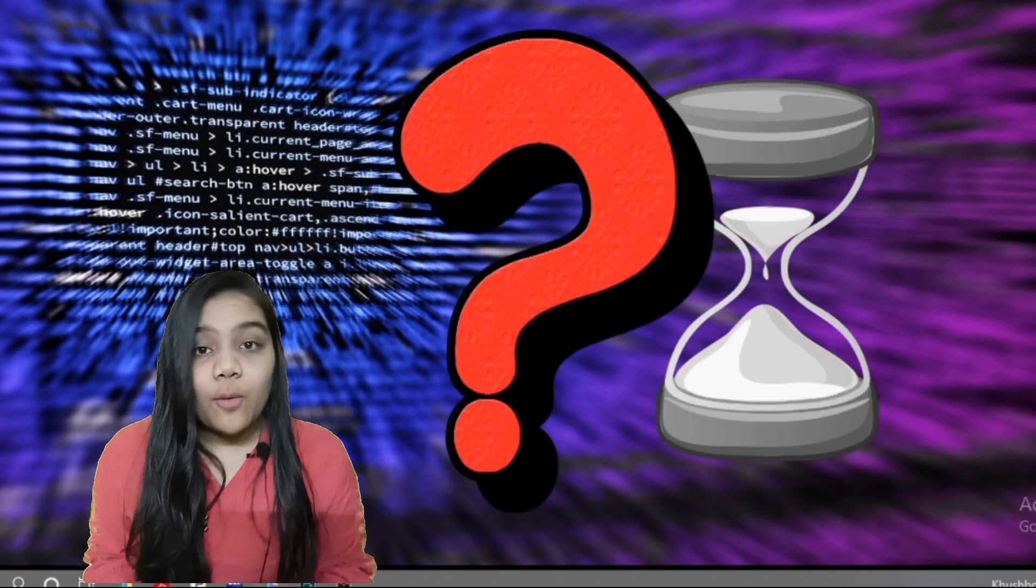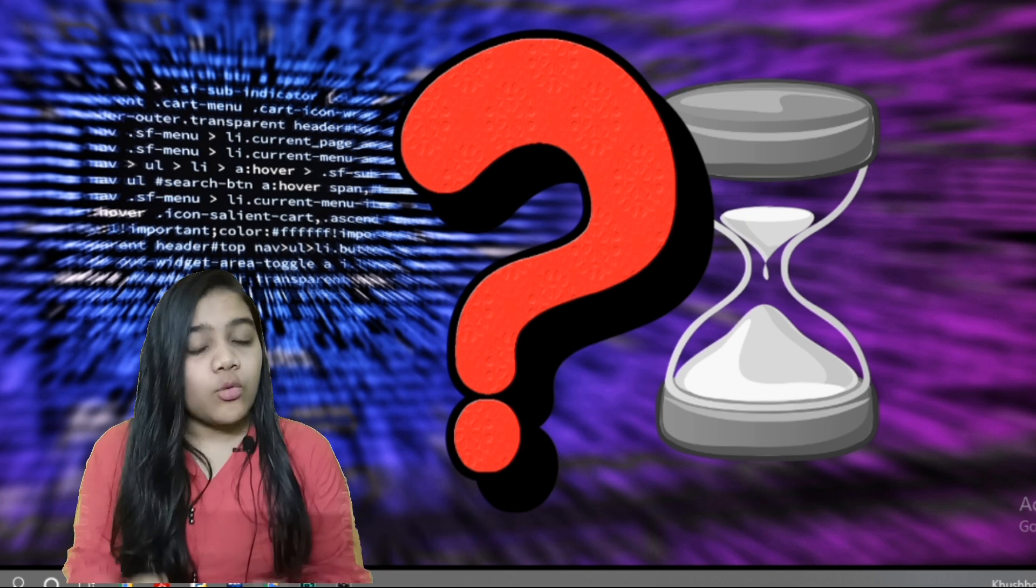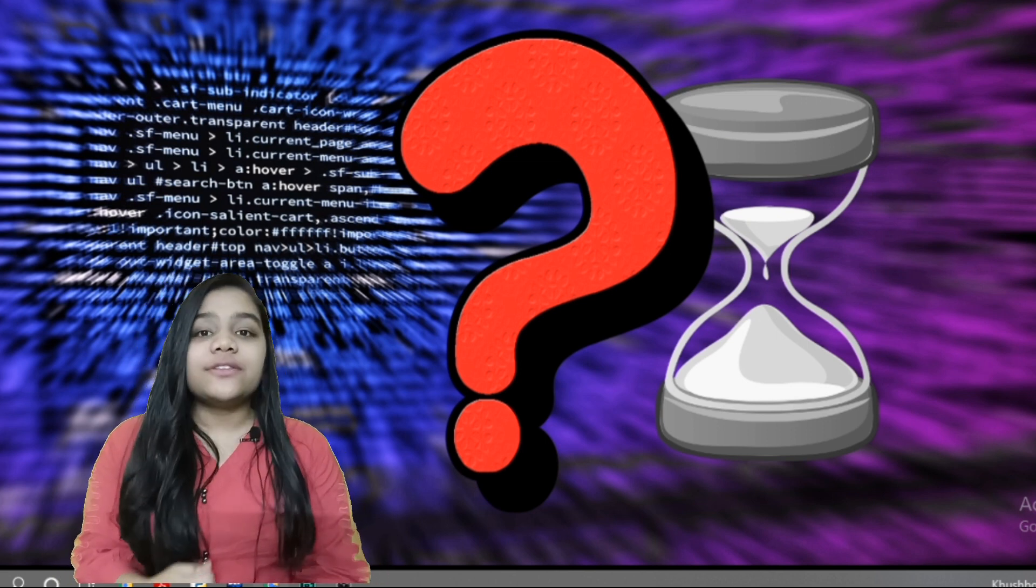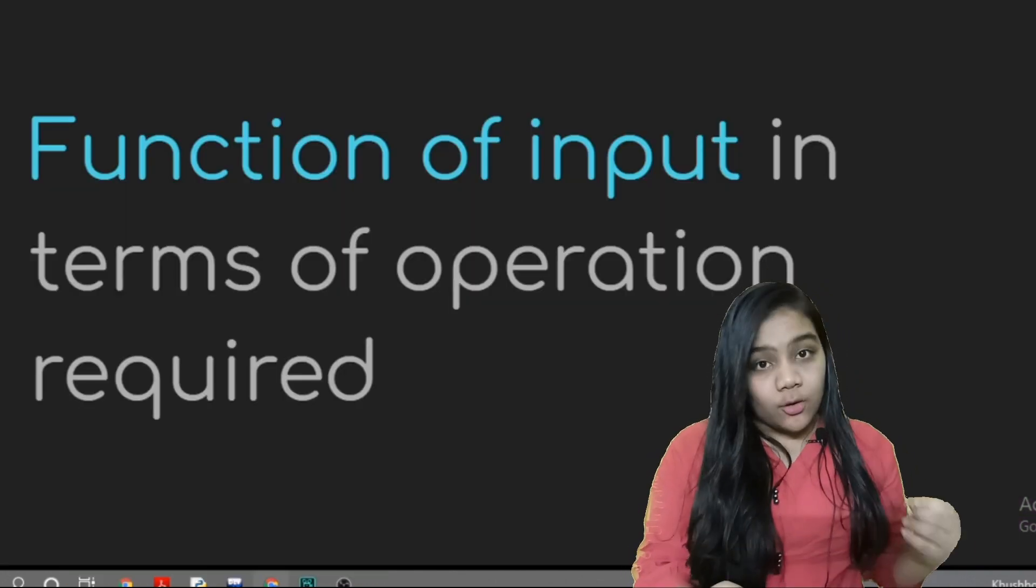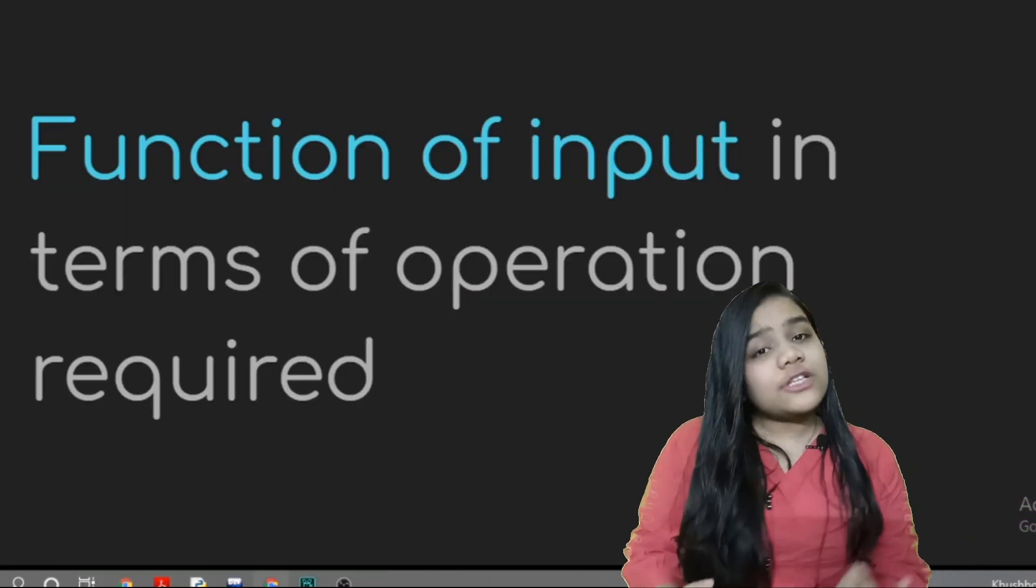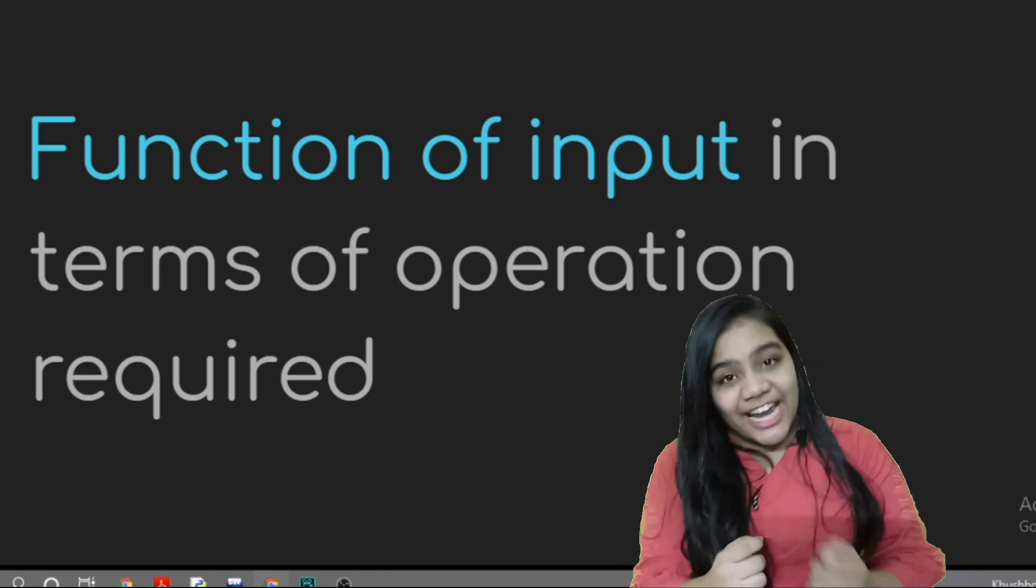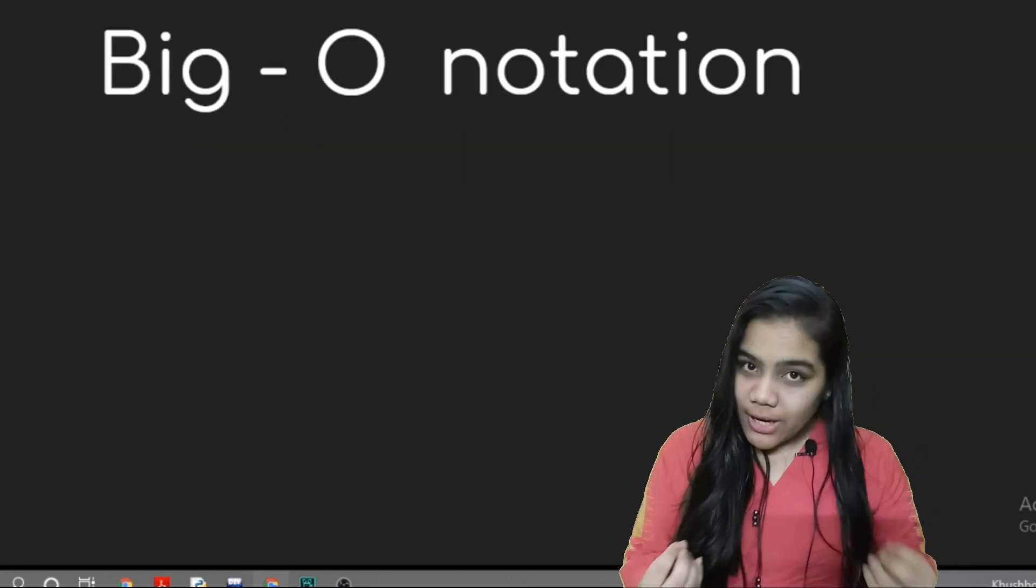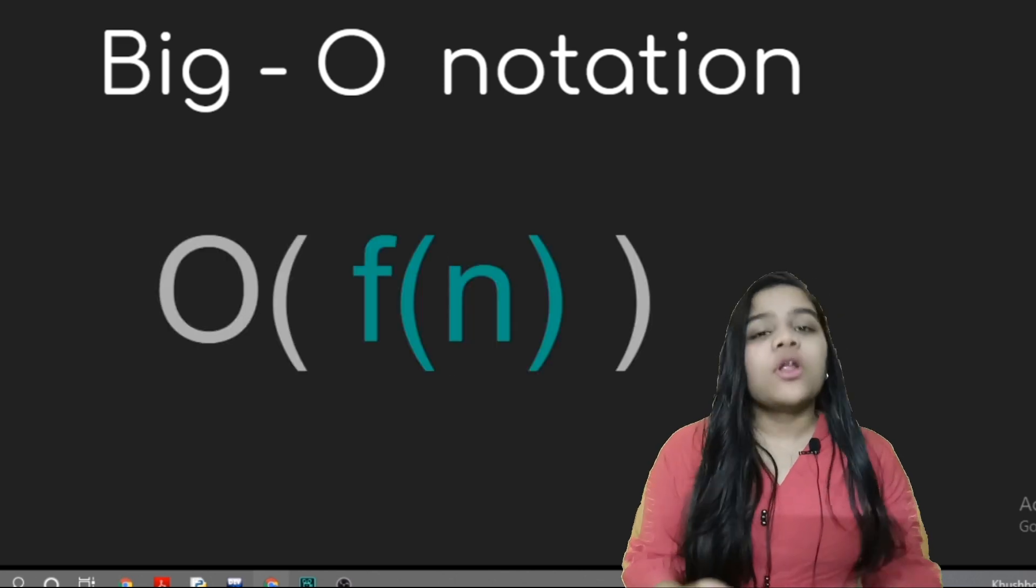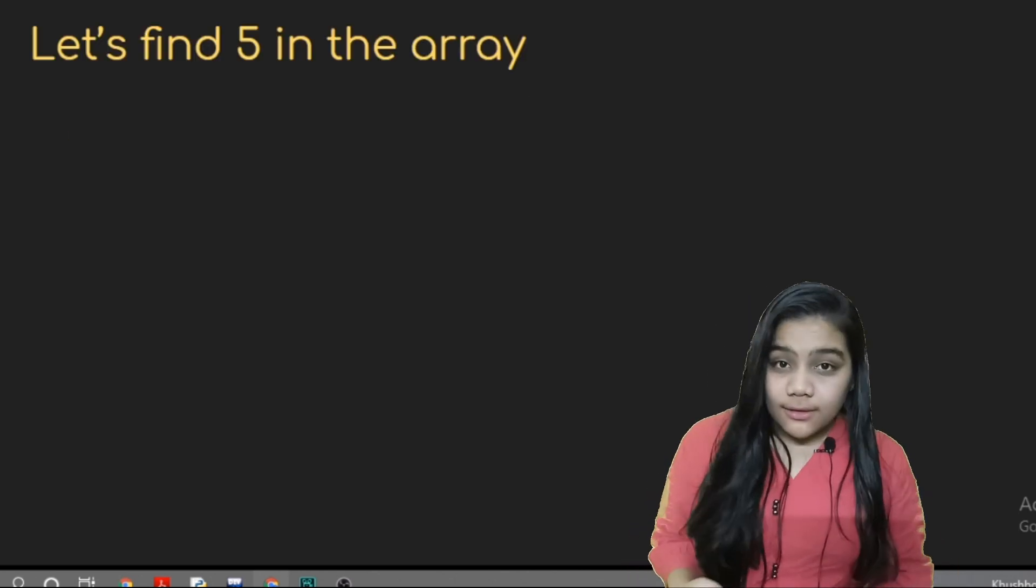To find time complexity we generally count the number of operations that an algorithm is performing and the time taken by this algorithm as a function of the size of input, and that is denoted by big O notation. Let's take a small example and try to find out the number of operations in that.